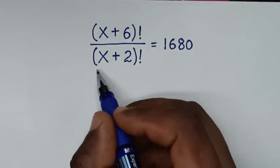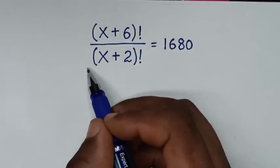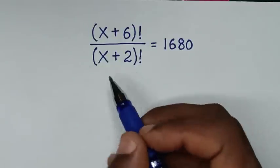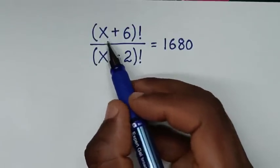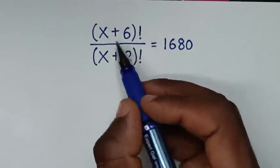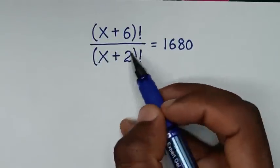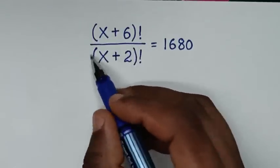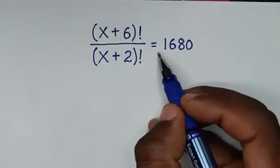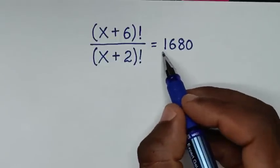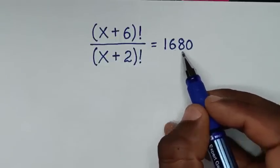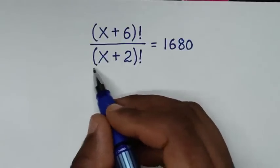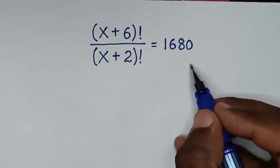Hello, you are welcome to solve this math problem, which is (x+6)! over (x+2)! is equal to 1680. We need to find the value of x from this equation.